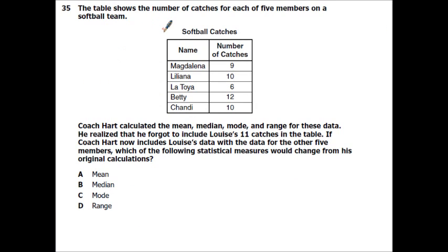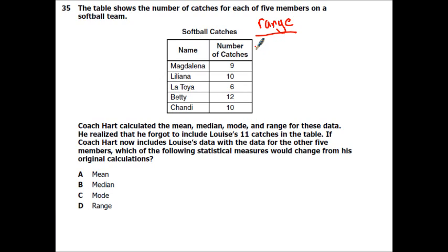The table shows the number of catches for each of five members on a softball team. Coach Hart calculated the mean, median, mode, and range for these data. He realized he forgot to include Luis's 11 catches in the table. If Coach Hart now includes Luis's data with the other five members, which statistical measures would change? Let's start with range — range is the biggest minus the smallest. The biggest was 12, the smallest was 6, so that 11 has nothing to do with it. The range doesn't change.